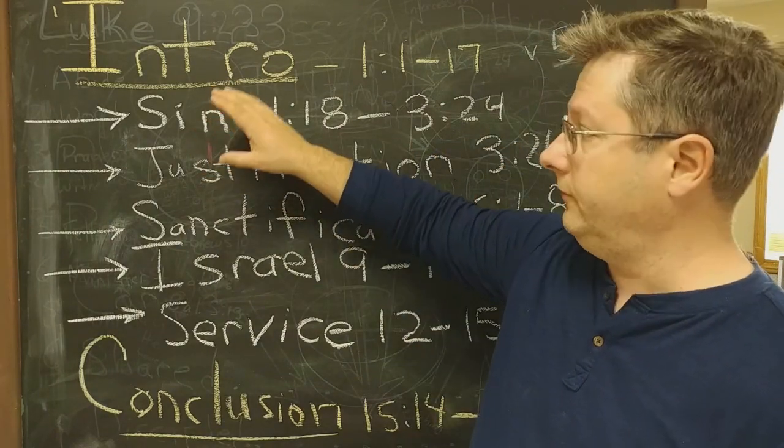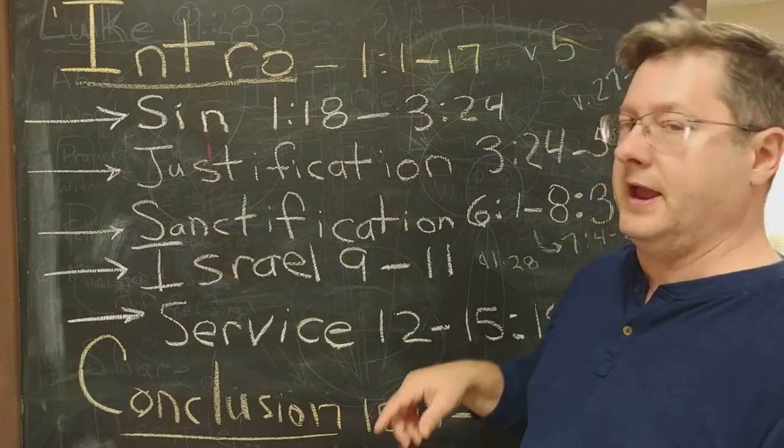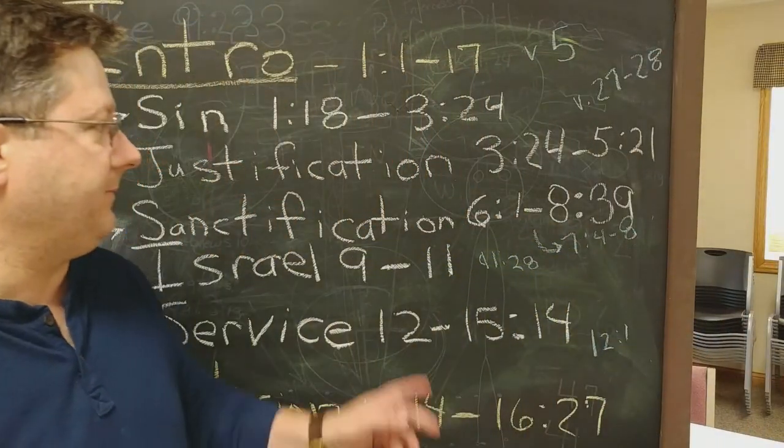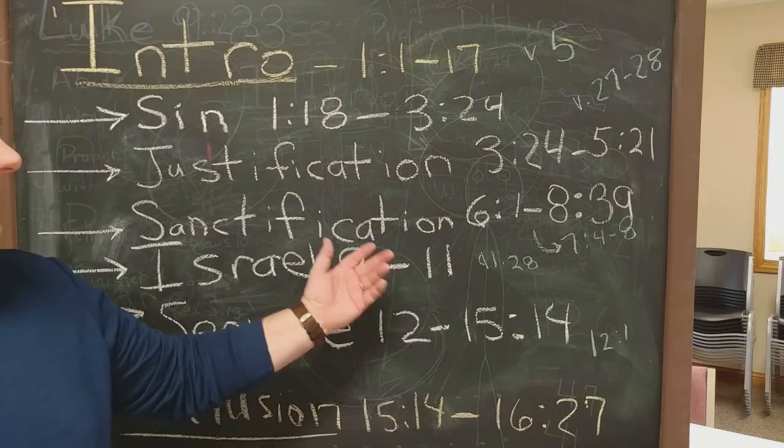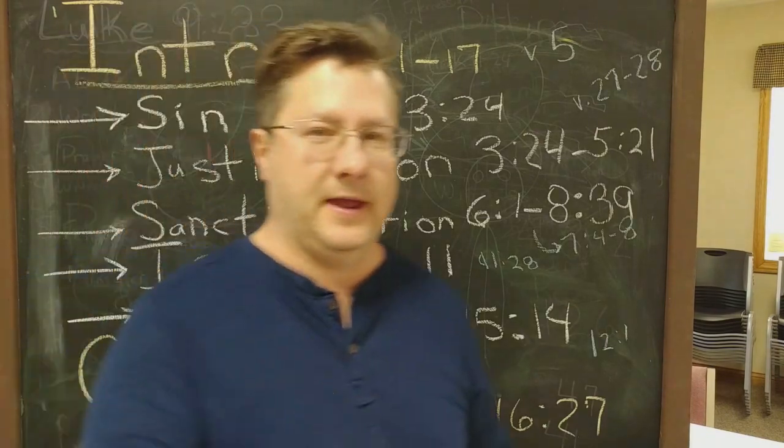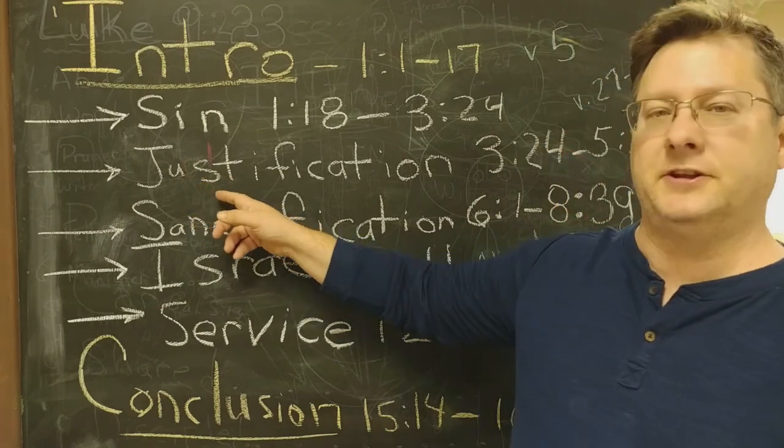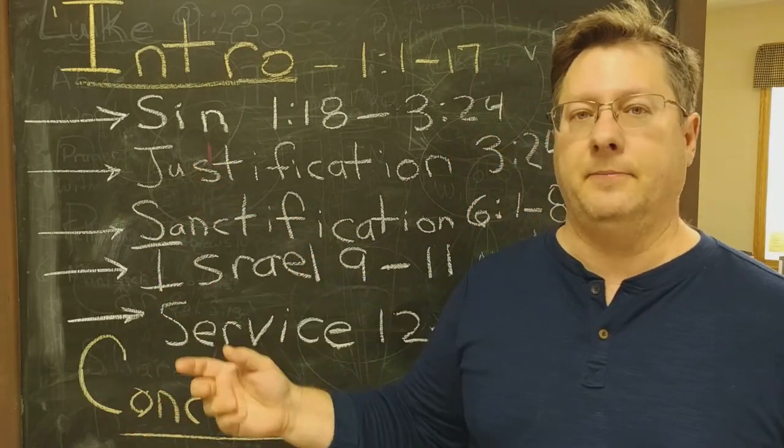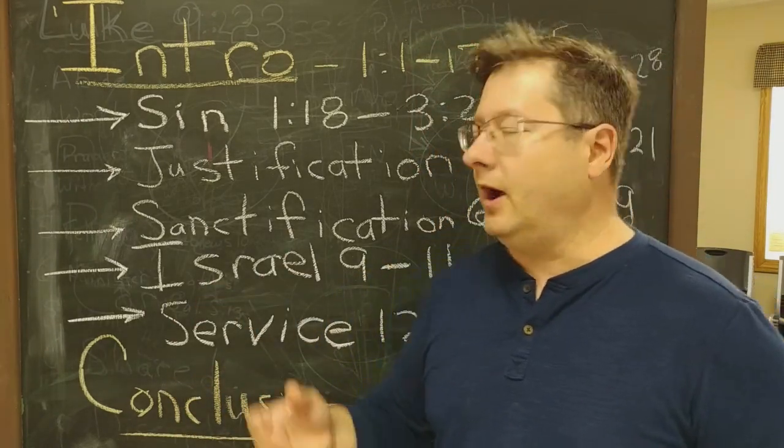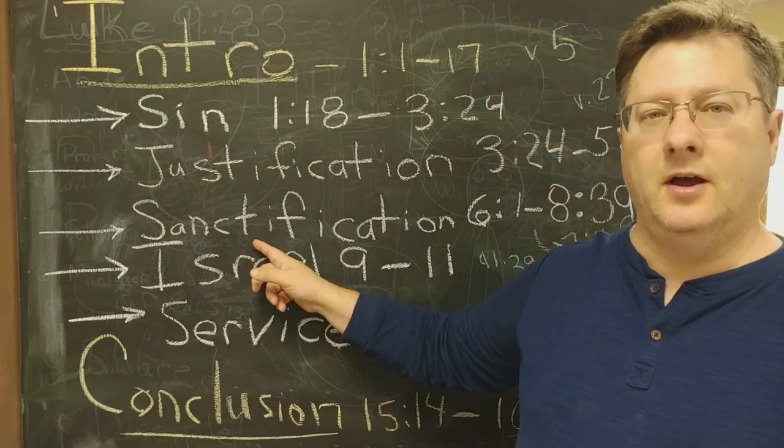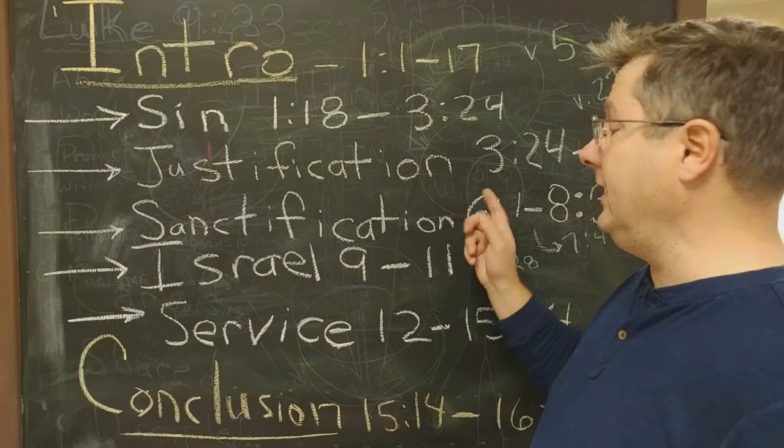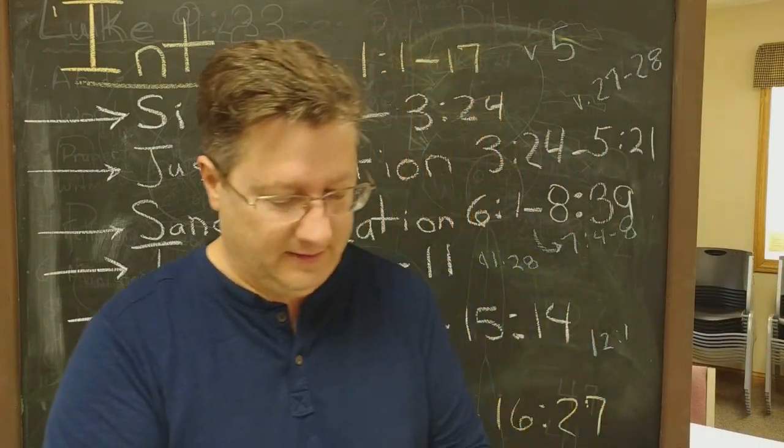The flow goes from sin and goes to justification. Then it goes to a big long word sanctification. That's in chapter 6 verse 1 through 8:39. The flow of thought goes if I have been justified by faith, here I am I'm ungodly, I've been justified by faith not by doing something good or being good or being better but just in my state. If God justified me as I am then why would I want to live a holy life? Why would I want to be good? Because God freely justified me and that's what he addresses in Romans chapter 6.